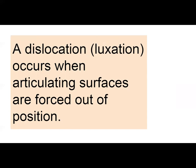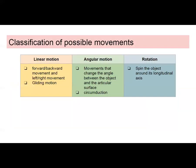Dislocation — also known as luxation — happens when articulating surfaces get forced out of position. If anybody's ever dislocated a joint, like a finger or shoulder, those articulating surfaces get forced out of position.